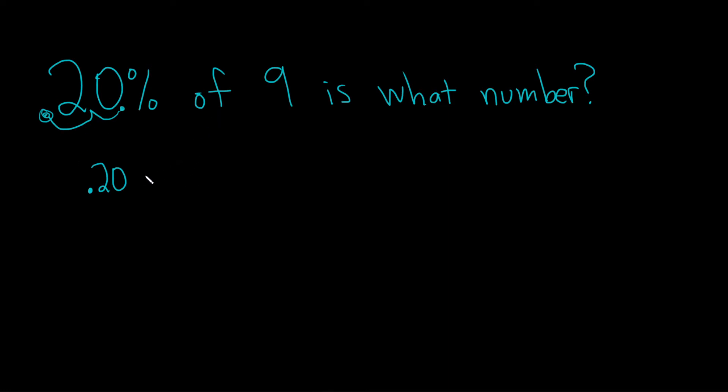Of means multiply, so we put a times here. That's the of. And then we have the 9, and then is means equals.